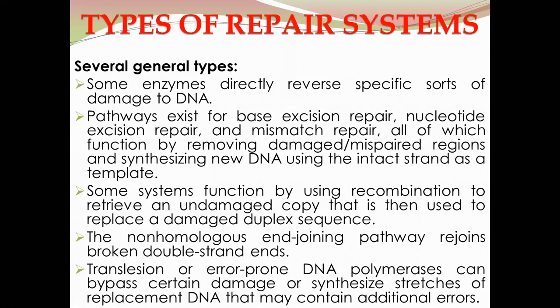There is another type of DNA repair system known as translession or error-prone repair. In this case, error-prone DNA polymerases such as DNA polymerase IV and V bypass certain damage or synthesize replacement DNA that may contain additional errors. These polymerases have the capacity to bypass the damaged DNA portion during replication. Because the new DNA strands after replication contain some errors, this system is known as the error-prone or translession repair system.